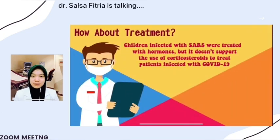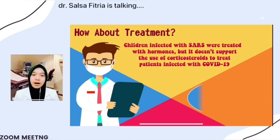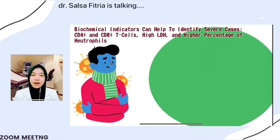Regarding treatment, many children infected with SARS were treated with hormones, but clinical evidence does not support the use of corticosteroids to treat patients infected with COVID-19. Therefore, the use of hormones in children infected with COVID-19 remains skeptical. Clinicians should monitor and pay attention to early warning biochemical indicators, which can help to identify severe cases. These are CD4+, CD4/CD8+ T-cells, high LDH, and a higher percentage of neutrophils.